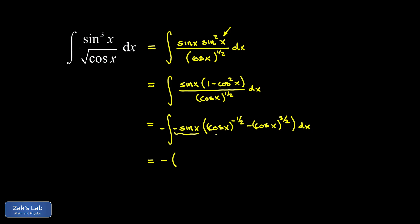The first term integrates like a simple power function since the chain rule is already handled. I add one to the exponent and divide by the resulting number, ending up with two cosine x to the one half. For the second term, I do the same thing: add one to the exponent to get five halves, divide by that to get two fifths, giving me minus two fifths cosine x to the five halves.